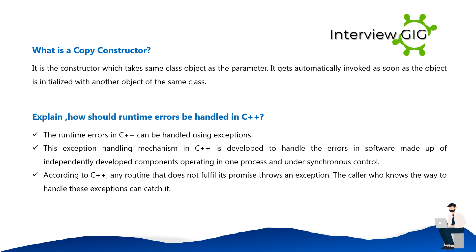How should runtime errors be handled in C++? Runtime errors in C++ can be handled using exceptions. This exception handling mechanism is developed to handle errors in software made up of independently developed components operating in one process and under synchronous control. According to C++, any routine that does not fulfill its promise throws an exception, and the caller handles those exceptions.